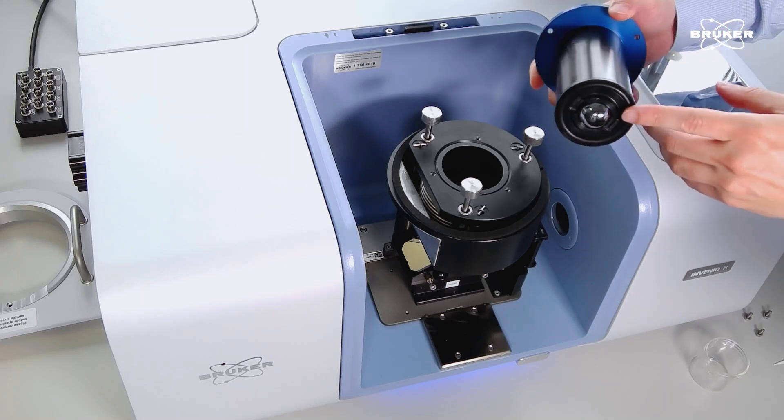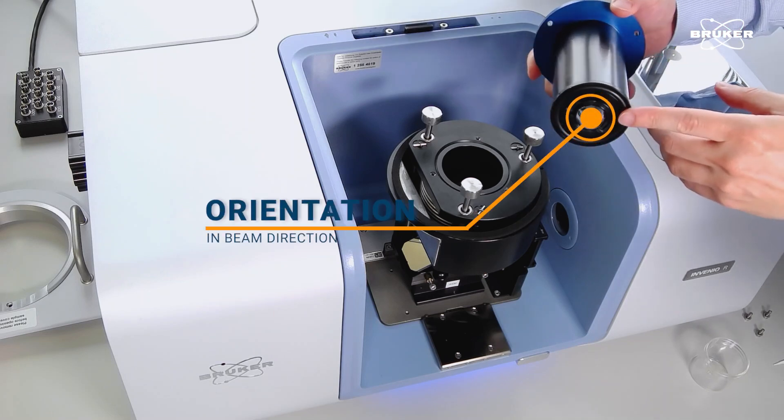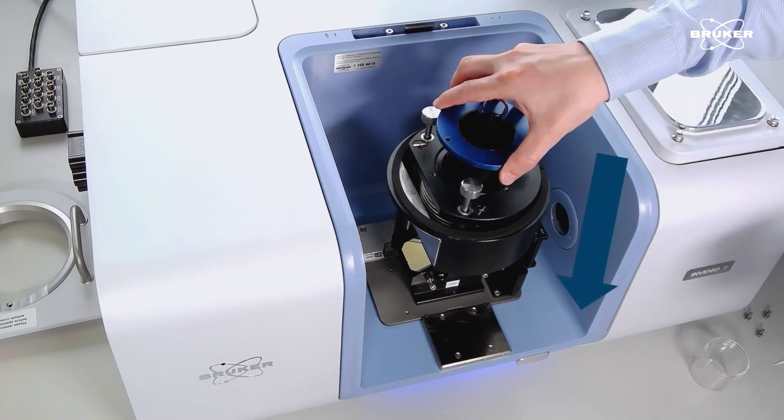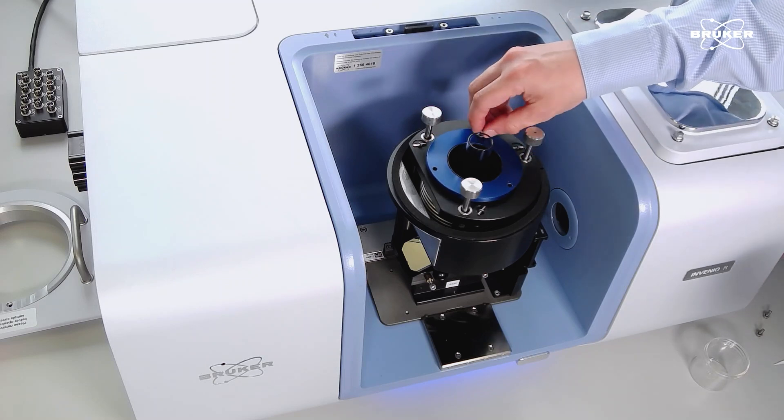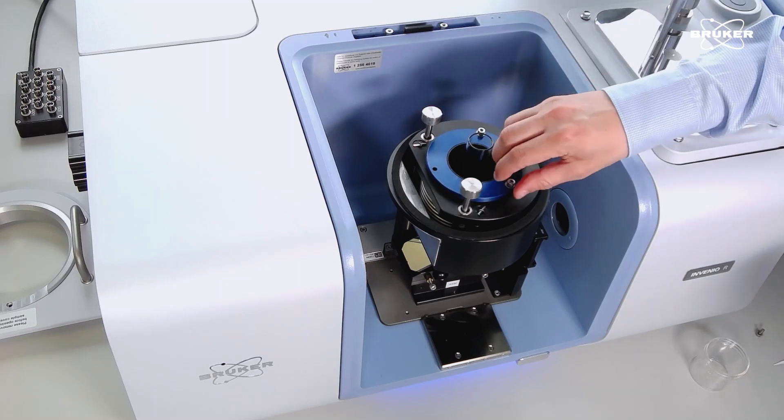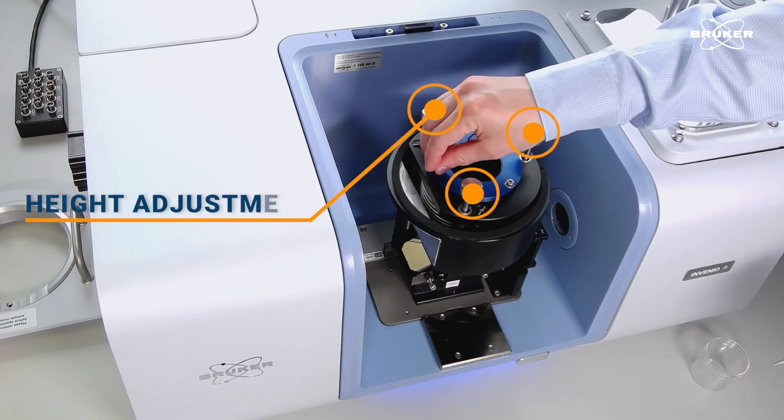Next, insert the entire body into the accessory with the ATR window facing downward into the beam path and secure it with three screws. Use the other three larger screws for optional height alignment.